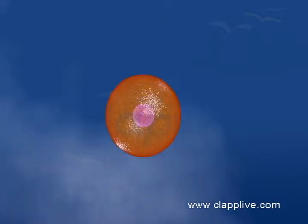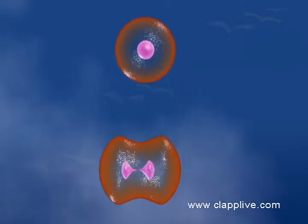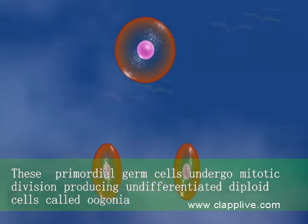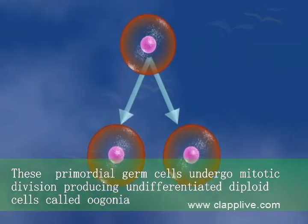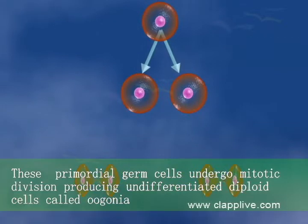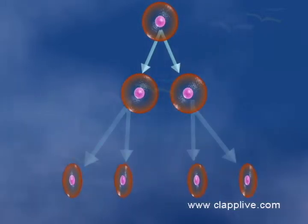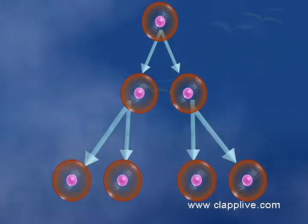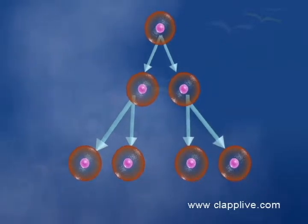During multiplication phase, the cells of germinal epithelium or fetal ovary undergo mitotic division producing undifferentiated diploid cells called oogonia, gamete mother cells. Some of these cells grow and become the primary oocyte which is diploid.